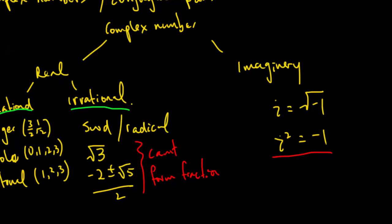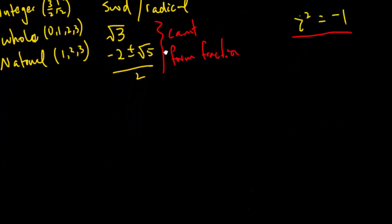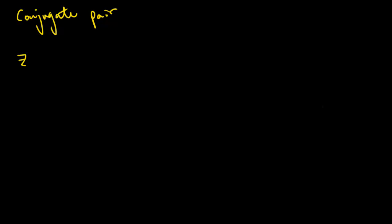That's the whole tree of complex numbers. A complex number consists of a real number plus an imaginary number, written as a plus bi. Now let's talk about conjugate pairs. For example, if z equals 3 plus 4i, the real part is 3 and the imaginary part is 4.